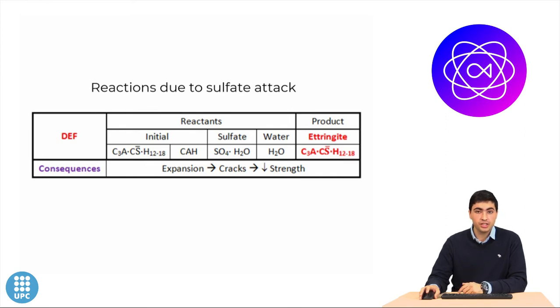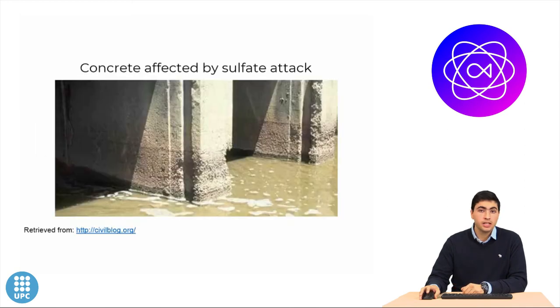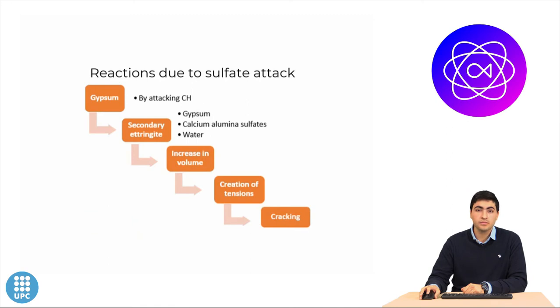The delayed ettringite formation, DEF, takes place under high temperatures, such as in the curing period, under contact with water. As shown here, sulfate attack can cause serious damage to concrete structures. The negative effect is mainly the loss of strength, due to the cracks and gaps resulting from the expansion of delayed ettringite.